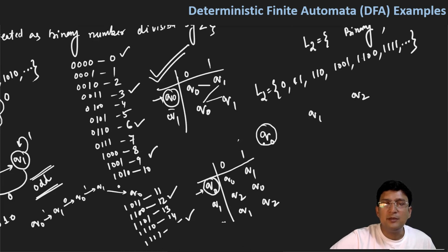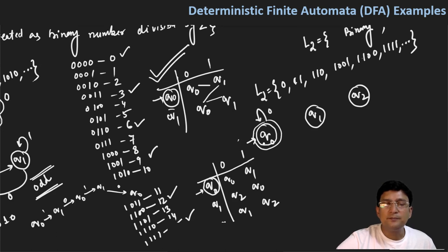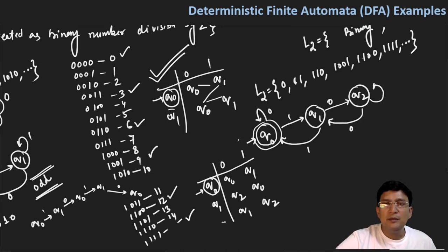तो dynamic automata बनाते हैं इस transition table के साथ। q0 start state है, q0 ही final state है। q0 पर 0 मिलने पर q0, 1 मिलने पर q1। q1 से 0 मिलने पर q2, q1 पर 1 मिलने पर q0। और q2 से 0 मिलने पर q1, q2 से 1 मिलने पर q2।